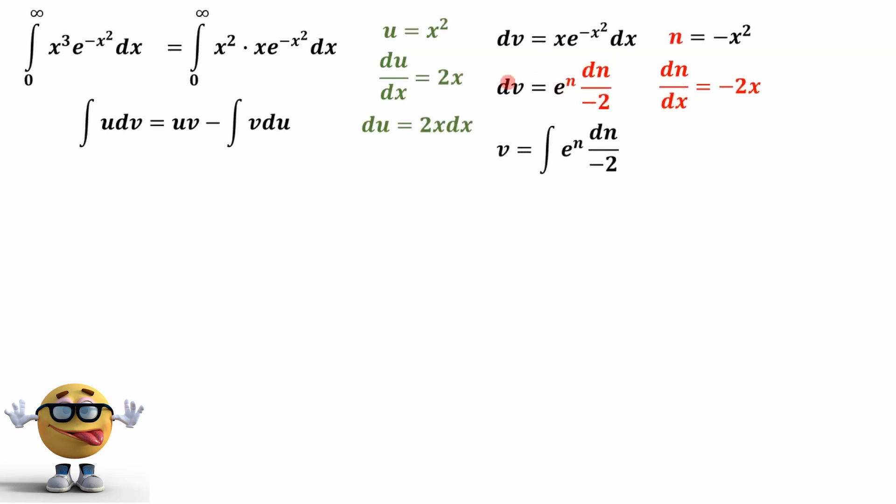At this point, we can integrate. So if we integrate both sides, we get v on the left. And then the integral of this, which we can evaluate. And the integral of e to the n with respect to n is itself. The negative one half comes along for the ride. So does the negative sign. Now we'll back substitute. So we'll substitute back in what n is, because we care about x and not n. And this is our v.